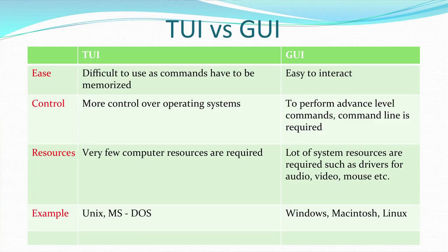Moving on to the graphical user interface, input can be given through the keyboard, the mouse, a scanner, a touch screen, or a joystick, forming an environment that is more user-friendly. Examples of command line interfaces include DOS and Unix, whereas Windows, Linux, and open-source operating systems are examples of graphical user interfaces.